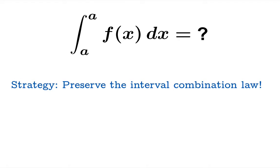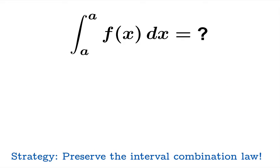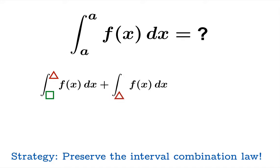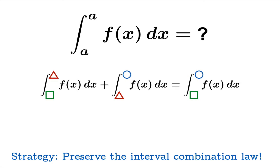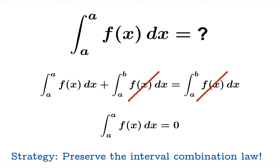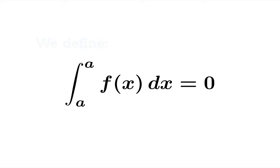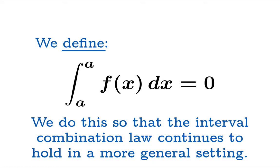Here's the strategy: we're going to preserve the interval combination law in new contexts. When you look abstractly at the interval combination law, it says that you can link up the limits of integration. If you substitute limits of integration where the first integral goes from A to A, then the template of the interval combination law would have you conclude a certain equation — but those two obviously cancel and you're left with the result that the integral from A to A equals zero. So we should define the definite integral from A to A to equal zero so that the interval combination law continues to hold in a more general setting.